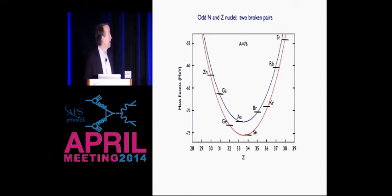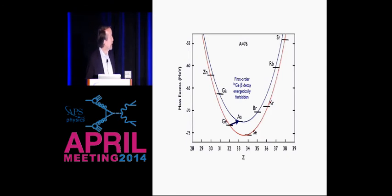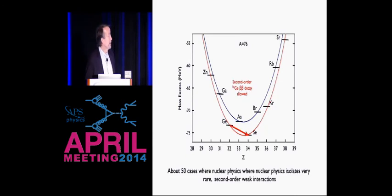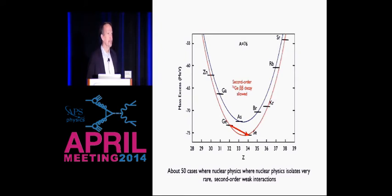This happens a lot in the periodic table, and it has an interesting consequence for beta decay. If you try to beta-decay germanium-76, it can't, because the beta decay is an uphill reaction — it requires energy that isn't available. But the second-order weak decay of germanium to selenium, changing the charge by two units, is allowed. So you have this wonderful nuclear filter that excludes first-order weak interactions and isolates the second-order weak interaction. It's one of two places in nature where you can directly study the effects of rare second-order weak interactions.